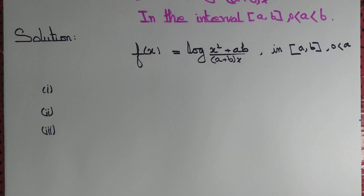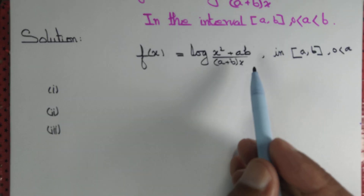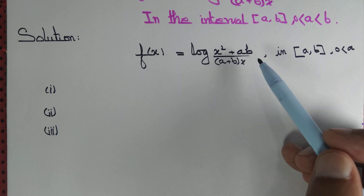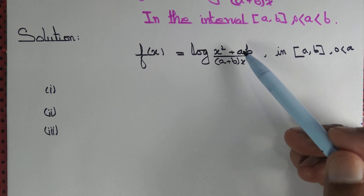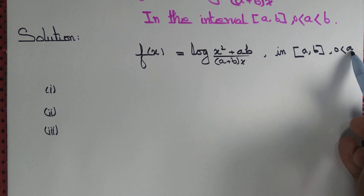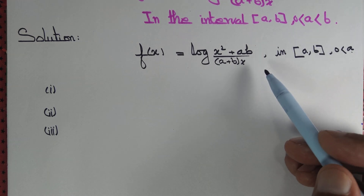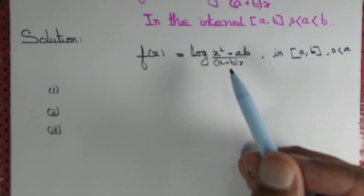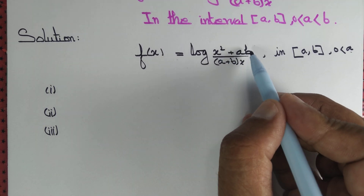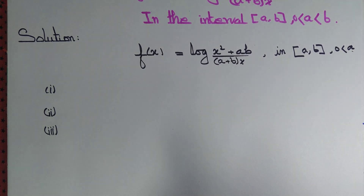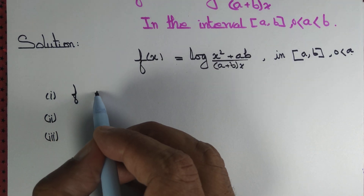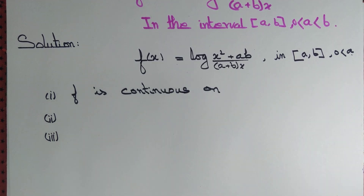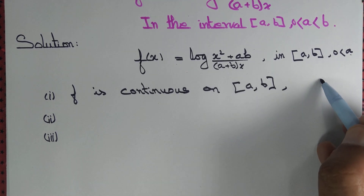To verify Rolle's theorem we need to show several criteria. First, f is continuous. Observe that x² + ab is a polynomial and (a+b)x is also a polynomial. A quotient of continuous functions is also continuous if the denominator is not zero. Since a > 0 and x lies in [a, b], it follows that (a+b)x > 0. Furthermore, the composite of continuous functions is also continuous, so f(x) = log((x² + ab)/((a+b)x)) is continuous on the closed interval [a, b].